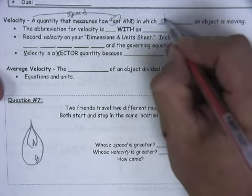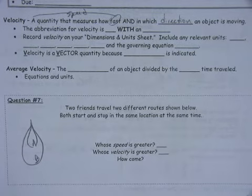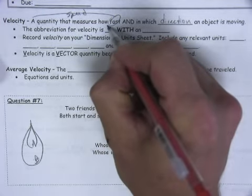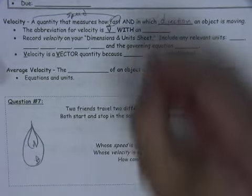And in which direction an object is moving. So not only is velocity how fast you're traveling, but it's how fast you're traveling in a certain direction. We have an abbreviation for velocity, and that's V with an arrow on top, and so there's our abbreviation for velocity, and it has the arrow.